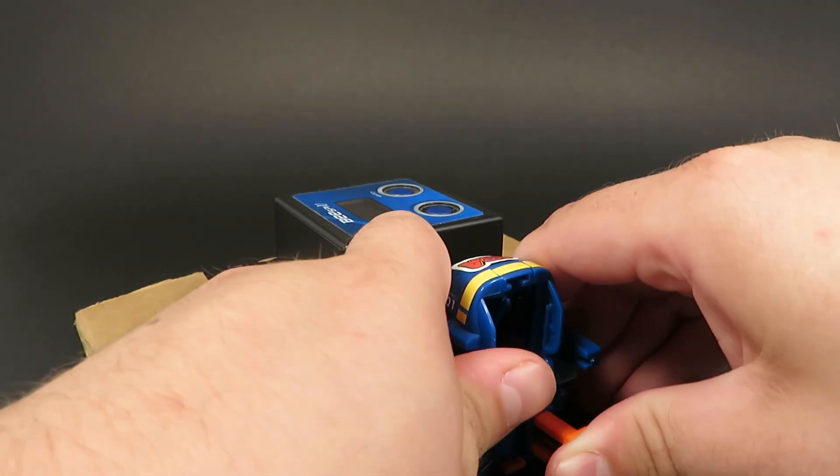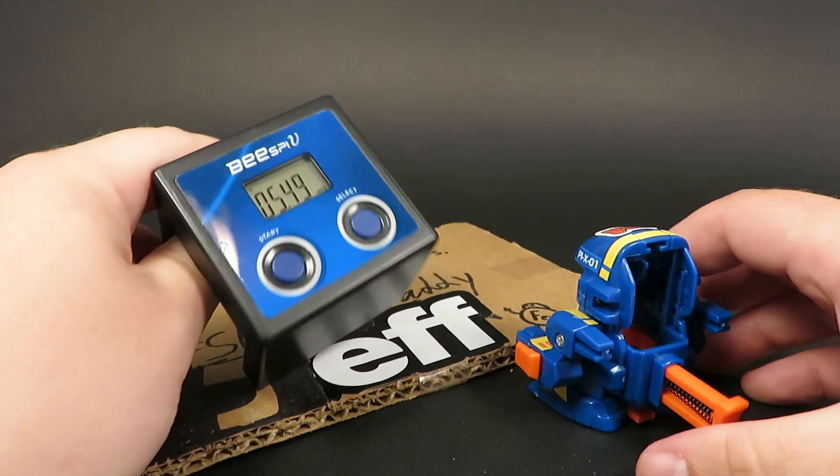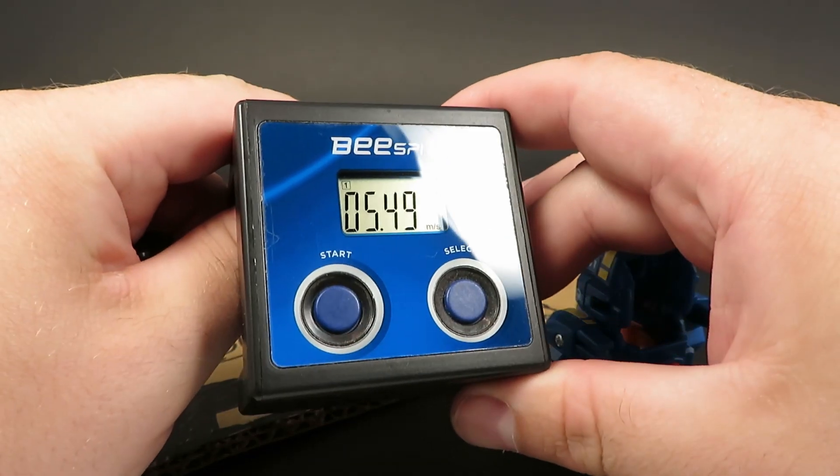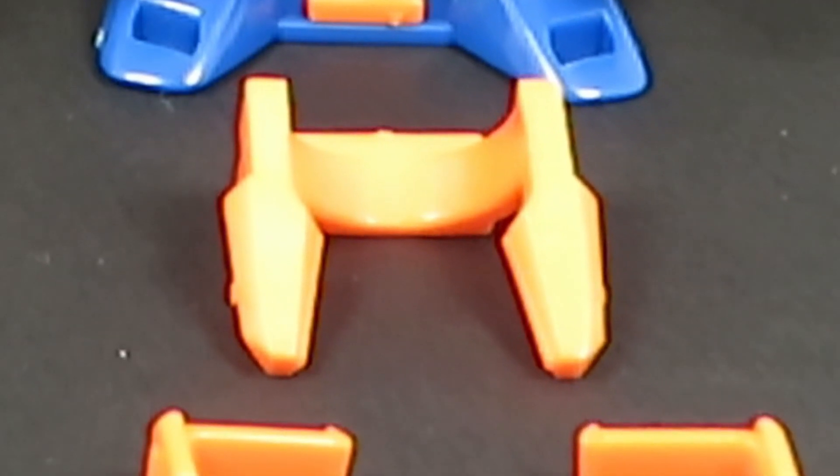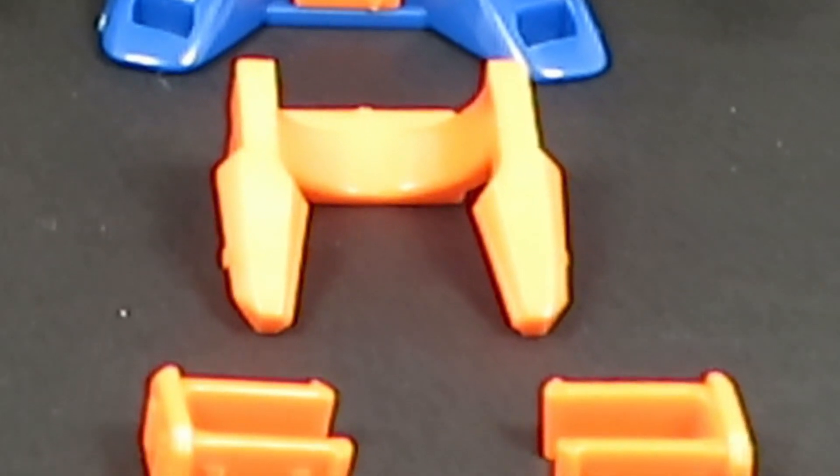But it toughens up your fingers though, for life. And when you have the Type B hold parts in, you get to fill in the arm gaps with these little filler pieces.